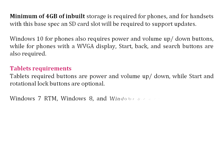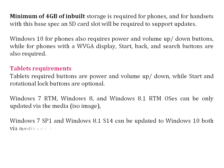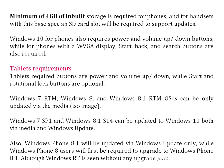Windows 7 RTM, Windows 8, and Windows 8.1 RTM OSes can only be updated via the Media ISO image. Windows 7 SP1 and Windows 8.1 can be updated to Windows 10 both via Media and Windows Update. Windows Phone 8.1 will be updated via Windows Update only, while Windows Phone 8 users will first be required to upgrade to Windows Phone 8.1, although Windows RT is seen without any upgrade path.